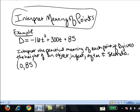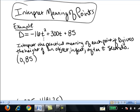In the first problem, we're given a formula: d equals negative 16t squared plus 300t plus 85. We're told that d stands for the height of an object in feet, and t is the number of seconds that have passed.